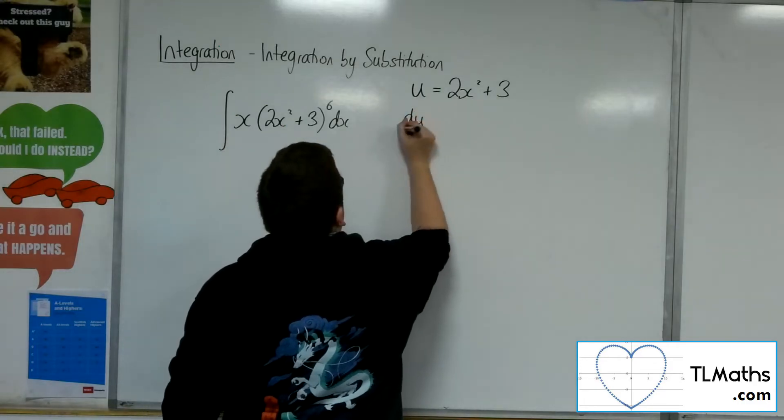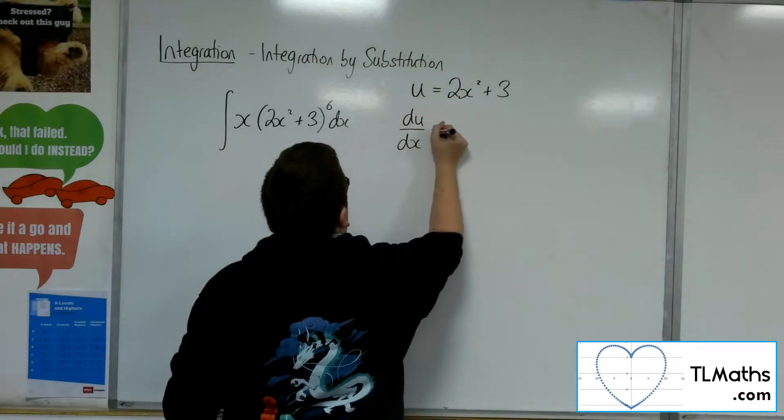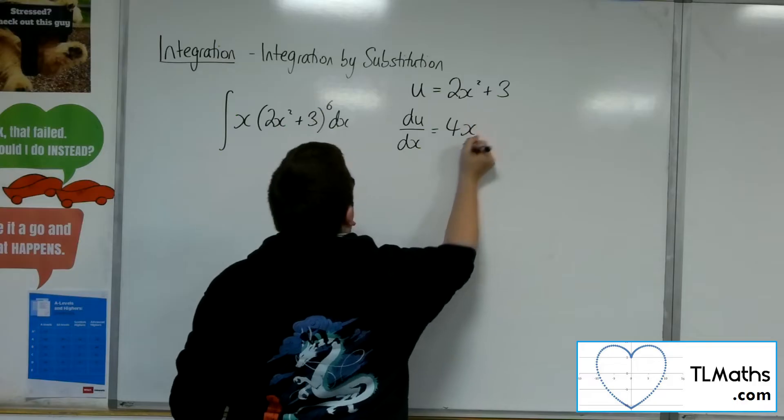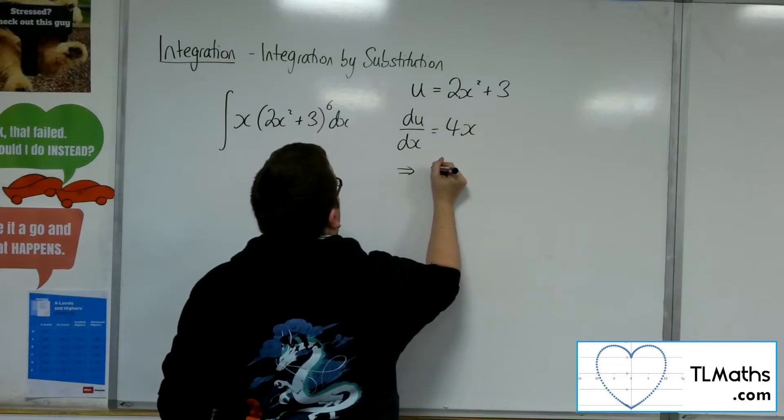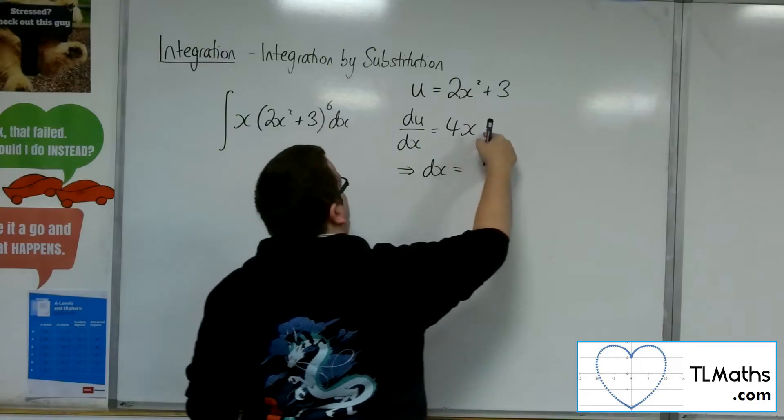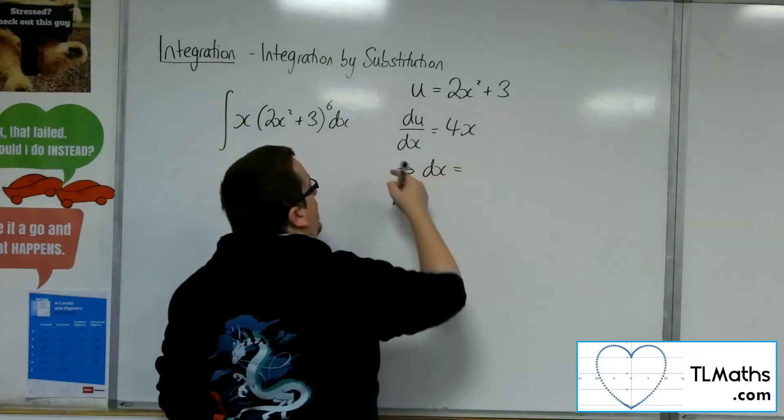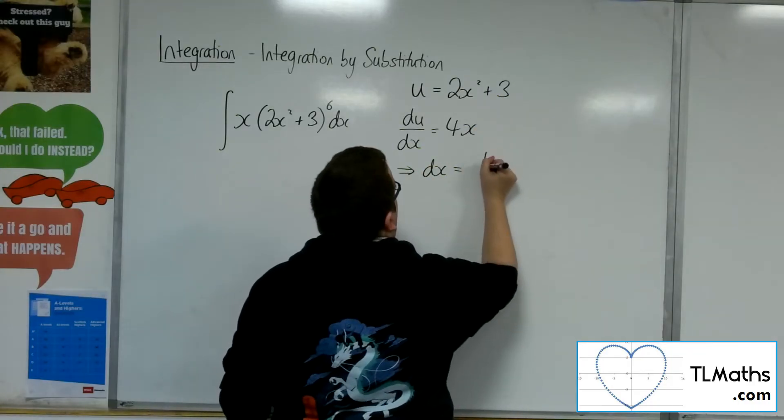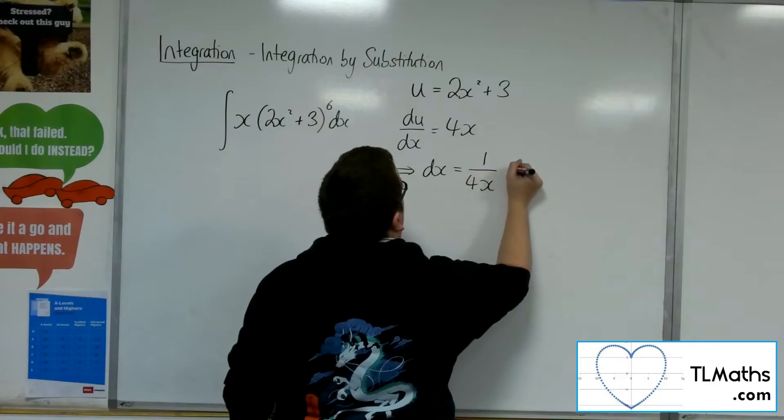So, first step, as it always is, you differentiate that and you get 4x. You want to rearrange this to get dx equals. So we would multiply both sides by the dx, divide both sides by 4x. So we'd have 1 over 4x du.